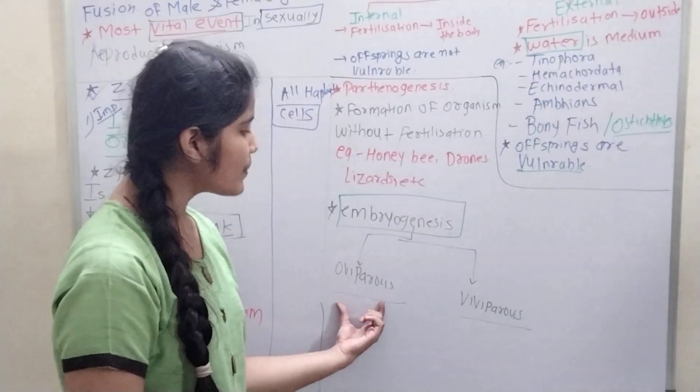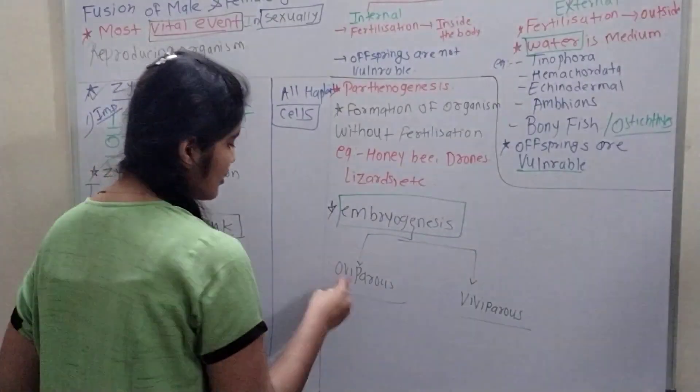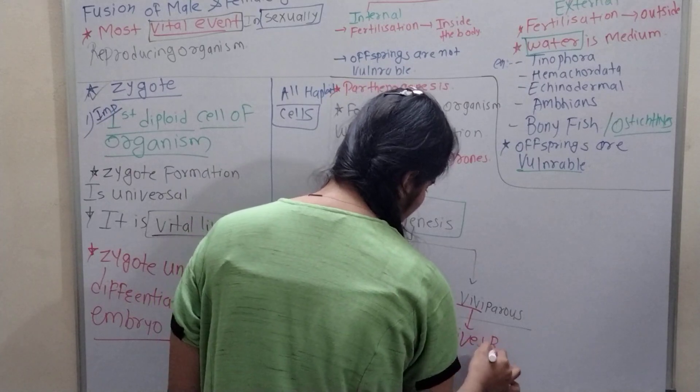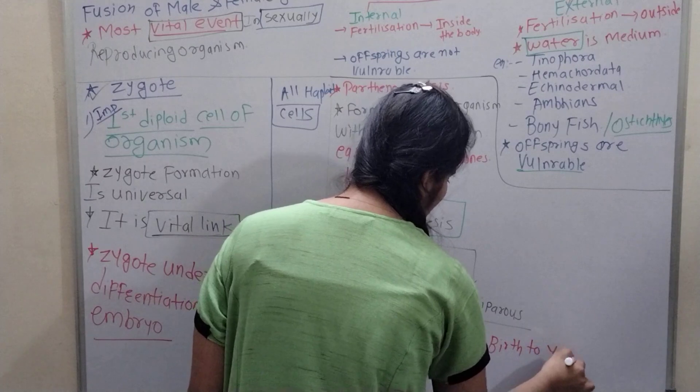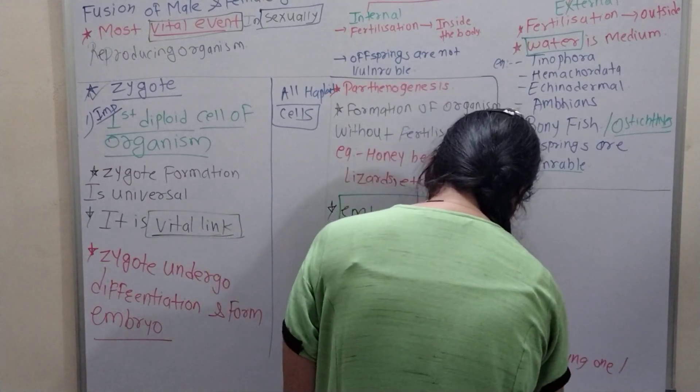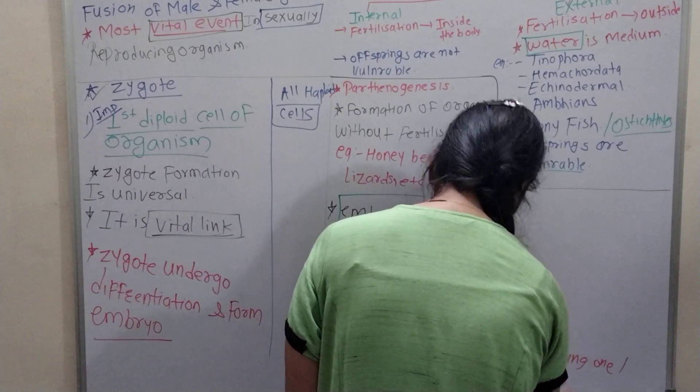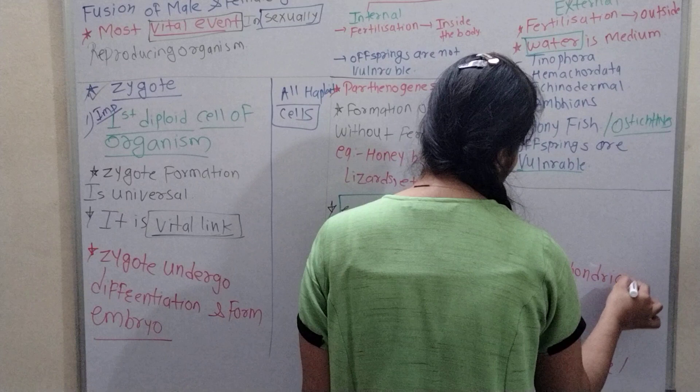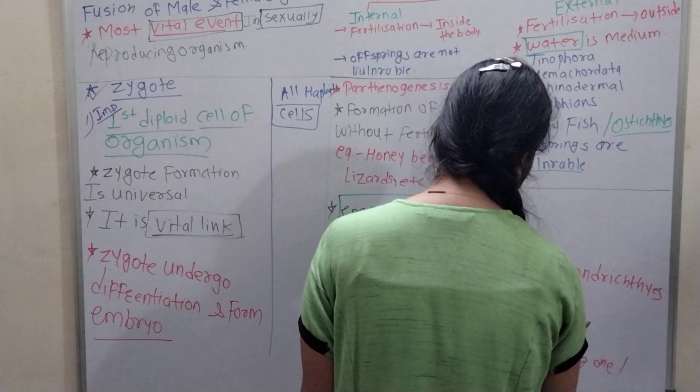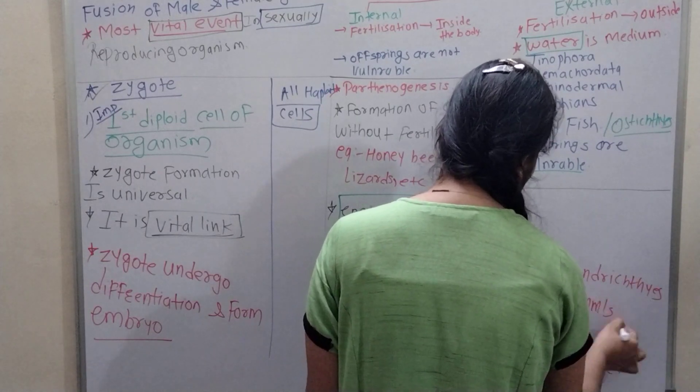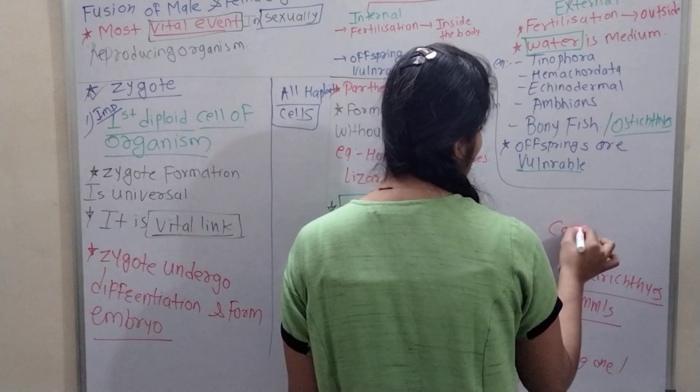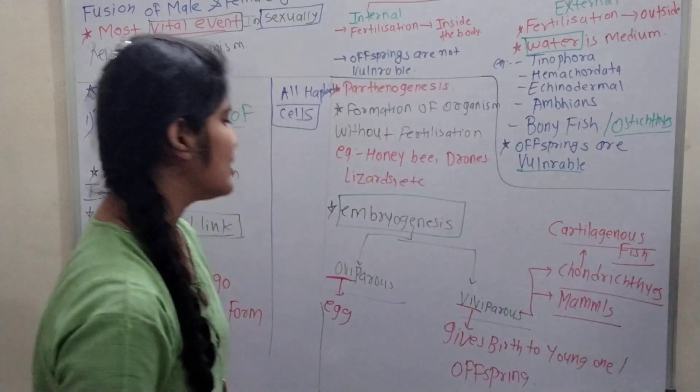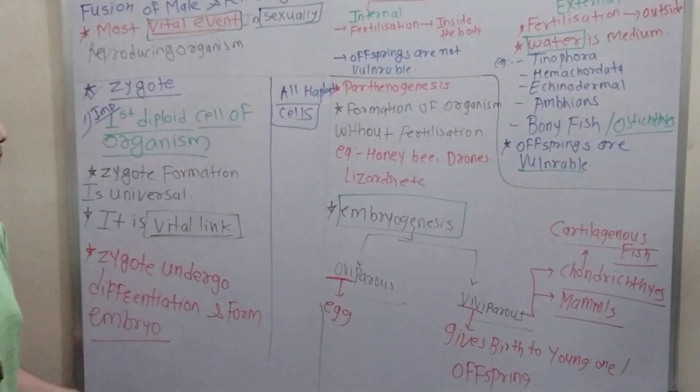In embryogenesis, there are oviparous and viviparous. Ovi, ova, means egg. And viviparous gives birth to young one or offspring. What are examples of viviparous? Cartilaginous fishes - Chondrichthyes, and mammals. Chondrichthyes means cartilaginous fishes. These are viviparous. Remaining all are oviparous.